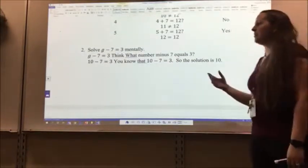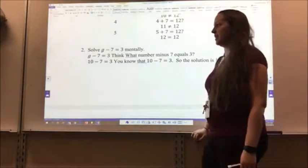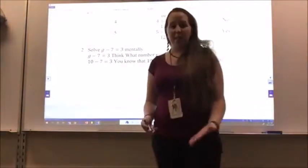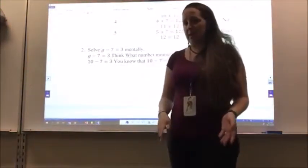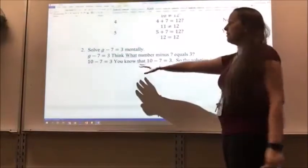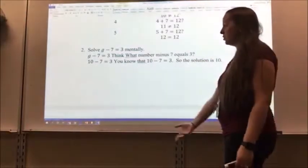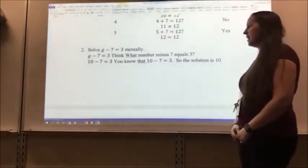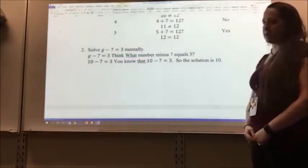I can solve g minus seven equals three mentally. So I think, what number minus three gives me seven? So ten minus seven gives me three. You know that ten minus seven equals three, so the solution is ten.